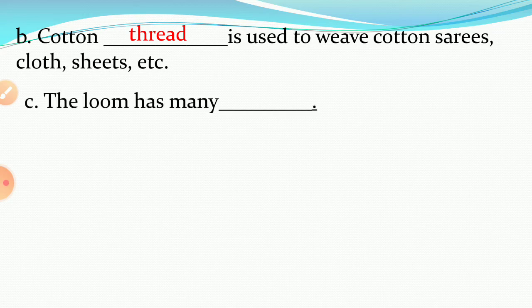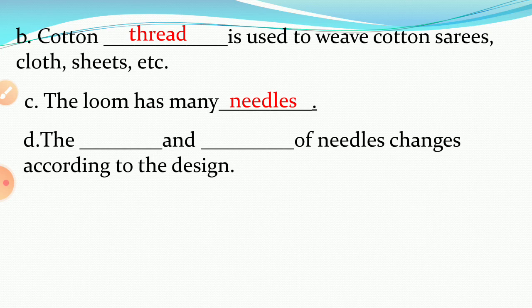Next, the loom has many blank. Answer is needles. The loom has many needles. Next, the blank and blank of needles changes according to the design. Answer is the size and number of needles changes according to the design.